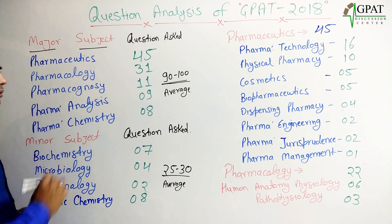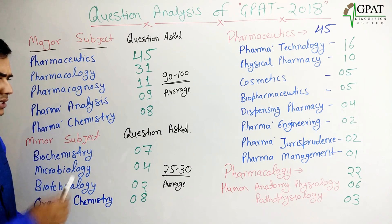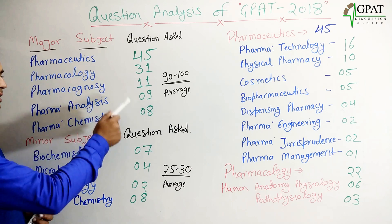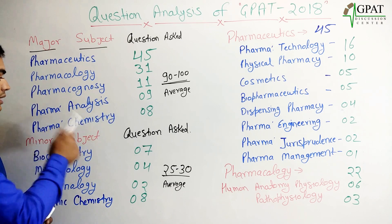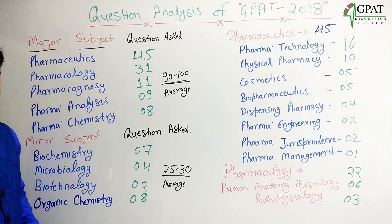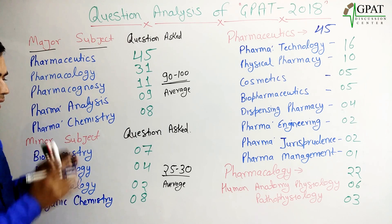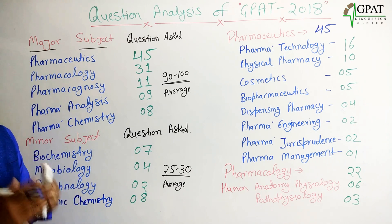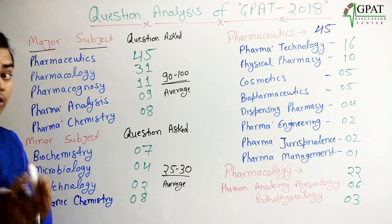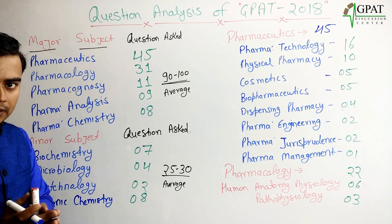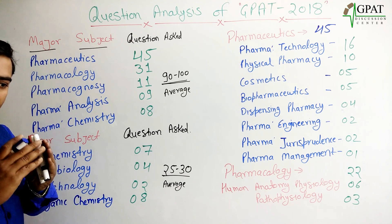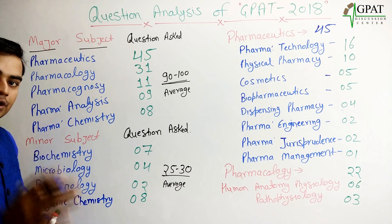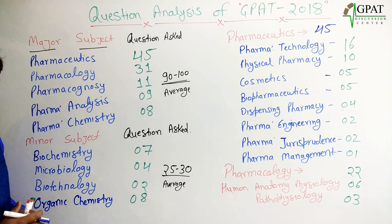Next, from pharmacognosy subjects, 11 questions. Pharmaceutical analysis, 9 questions. And pharmaceutical chemistry — here I am talking about pharmaceutical or inorganic chemistry, but not organic chemistry. Organic chemistry is very important and has been put into the minor subjects category — 8 questions asked from pharmaceutical chemistry.